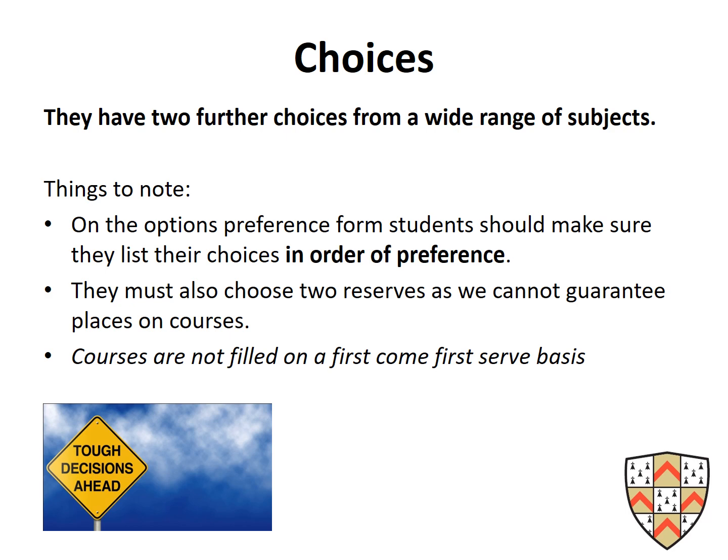Students have 2 further choices from a wide range of subjects. On the options preference form, they should list choices in order of preference. If there's a timetable conflict, the first choice takes priority and we'd look for a different option for the second or third. They must also choose two reserves as places on courses cannot be guaranteed, purely due to timetabling. We do our best to maximise opportunity for students but cannot make guarantees.